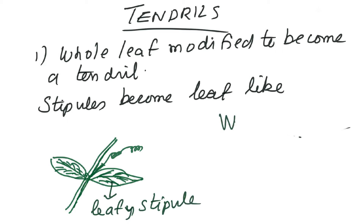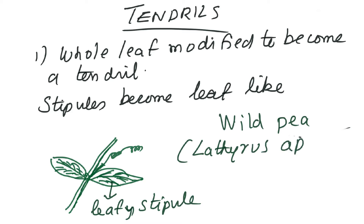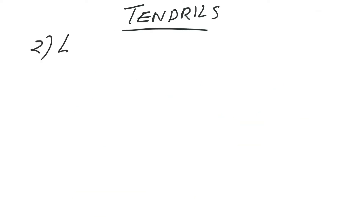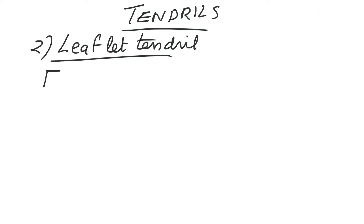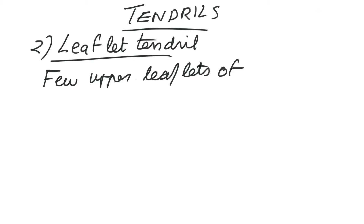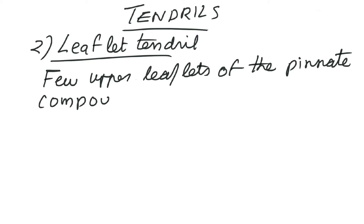In this modification we don't see leaves — we instead see tendrils. A notable example is wild pea, that is Lathyrus aphaca, where the whole leaf has developed into a tendril. The second interesting case is the leaflet developing as a tendril. A leaflet is the leaf structure developing on a rachis, on a secondary axis, and those leaflets are becoming tendrils.